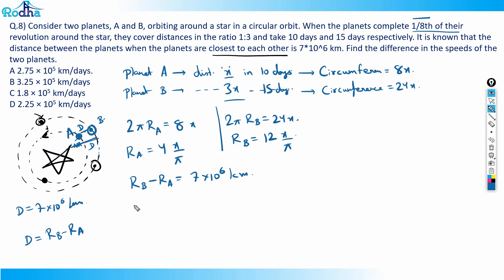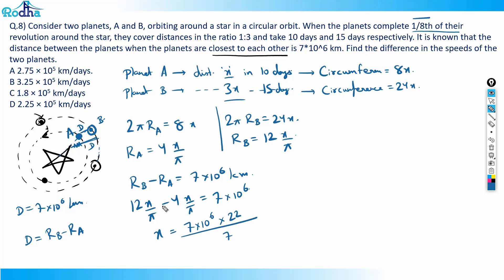Substituting: rB − rA = 12x/π − 4x/π = 8x/π = 7×10⁶. So x = 7×10⁶ × π/8 = 7×10⁶ × (22/7)/8, which simplifies to x = 2.75×10⁶ kilometers.